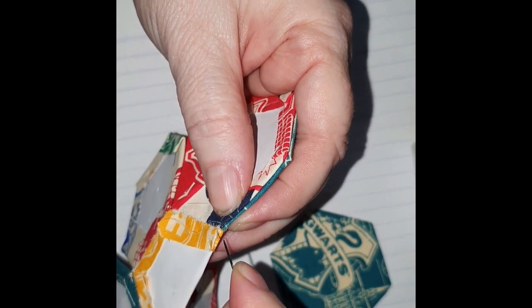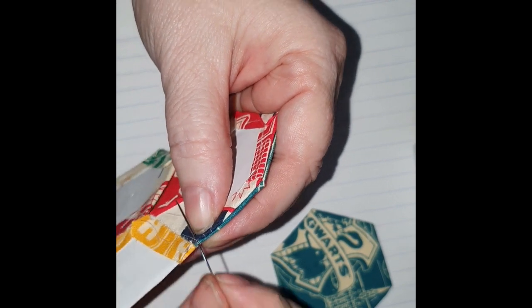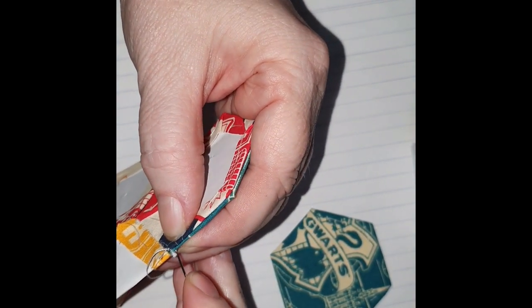Now what I'm doing here is more of the side stitches. This is the little tiny, tiny stitches that I do to hold the hexagons together.